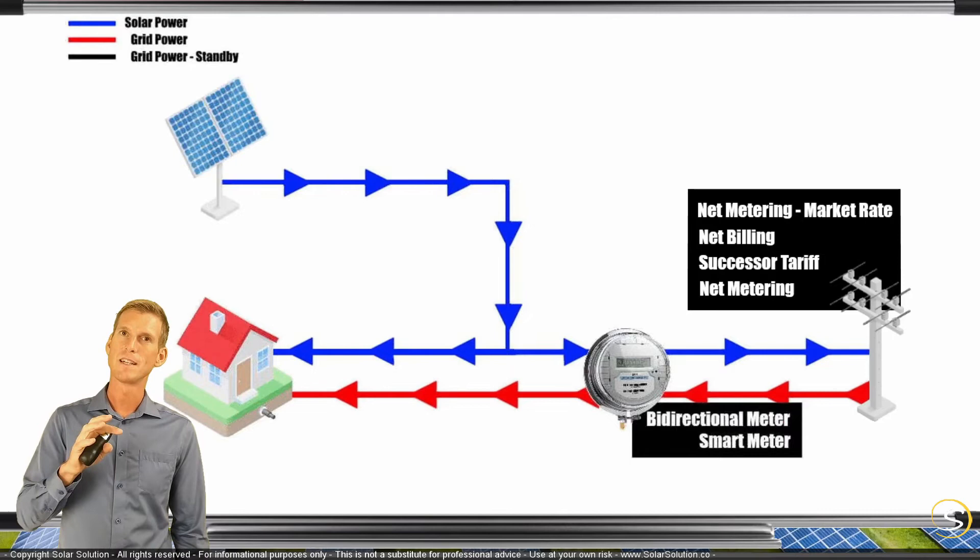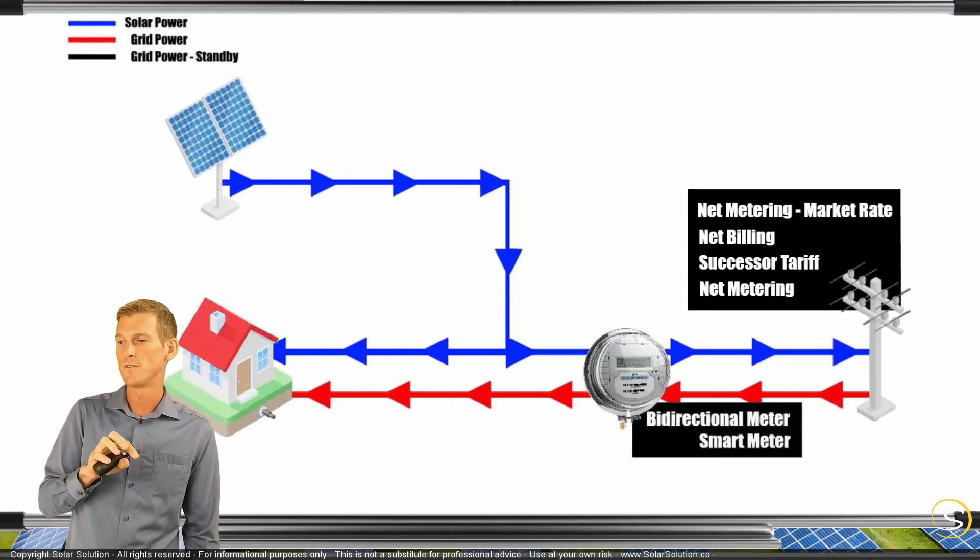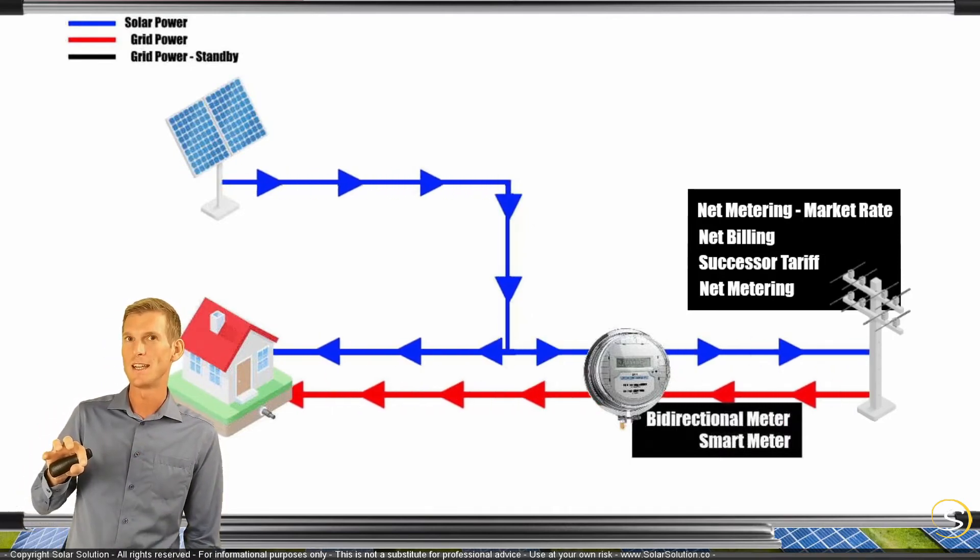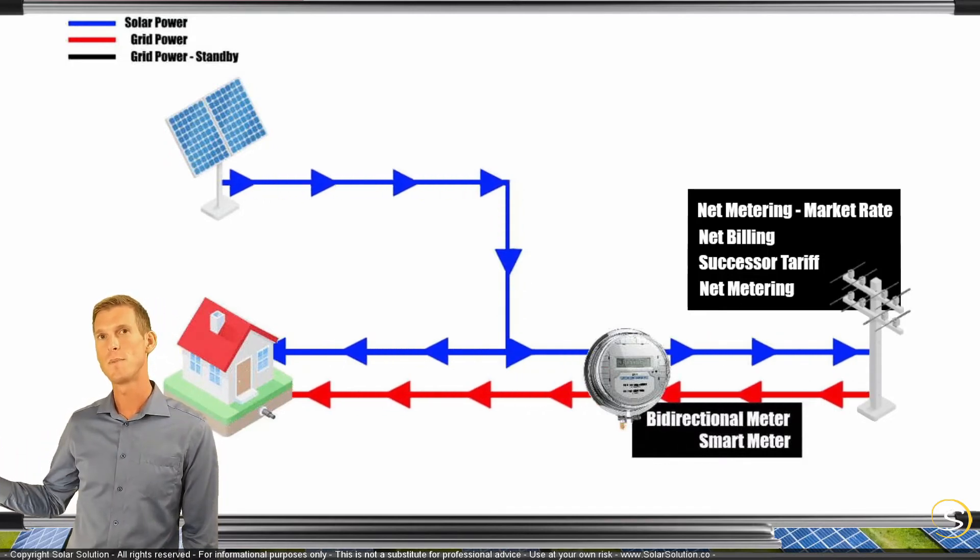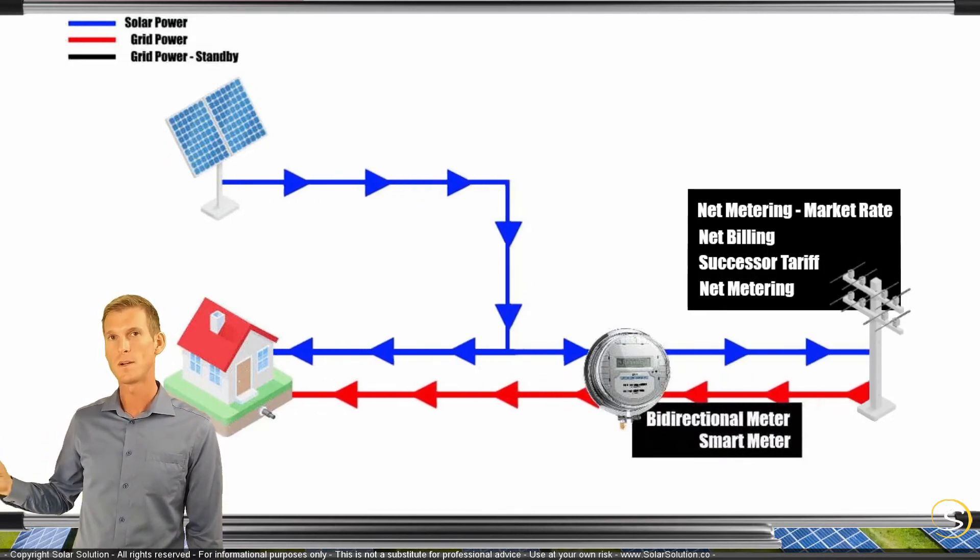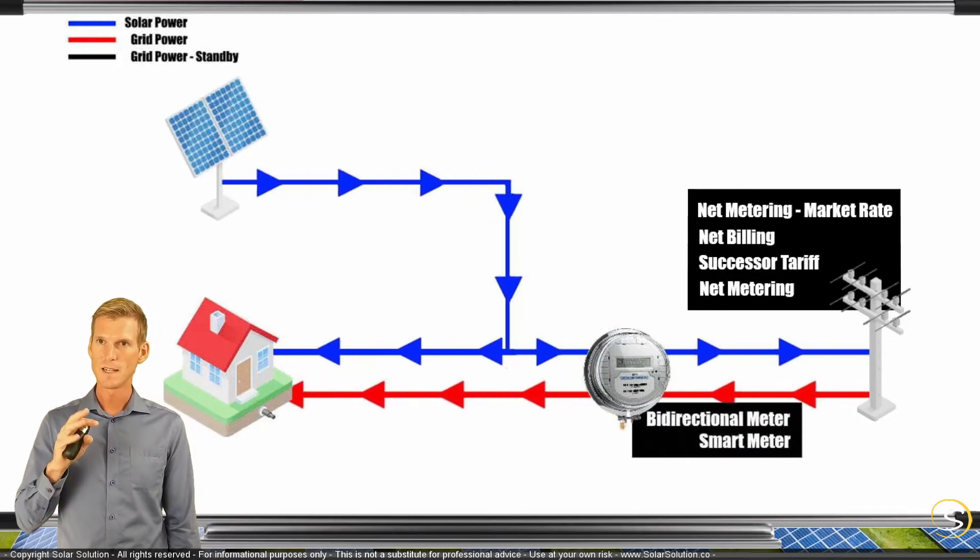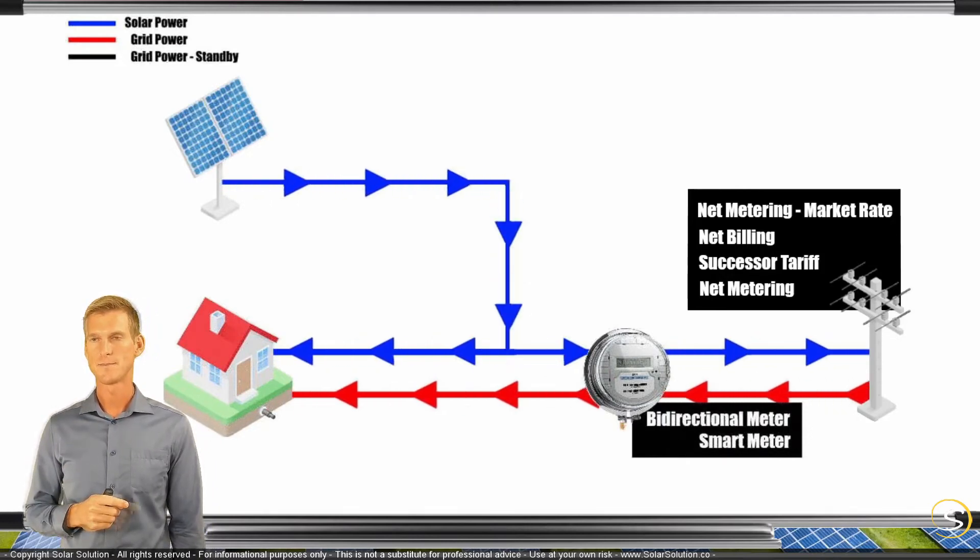Some people that really manage the system well can try to produce as much as they can during the day to feed in as much as they can during peak hours. Then during the night hours, they can consume power from the grid but pay a much lower price for it. That's net metering at the market rate.